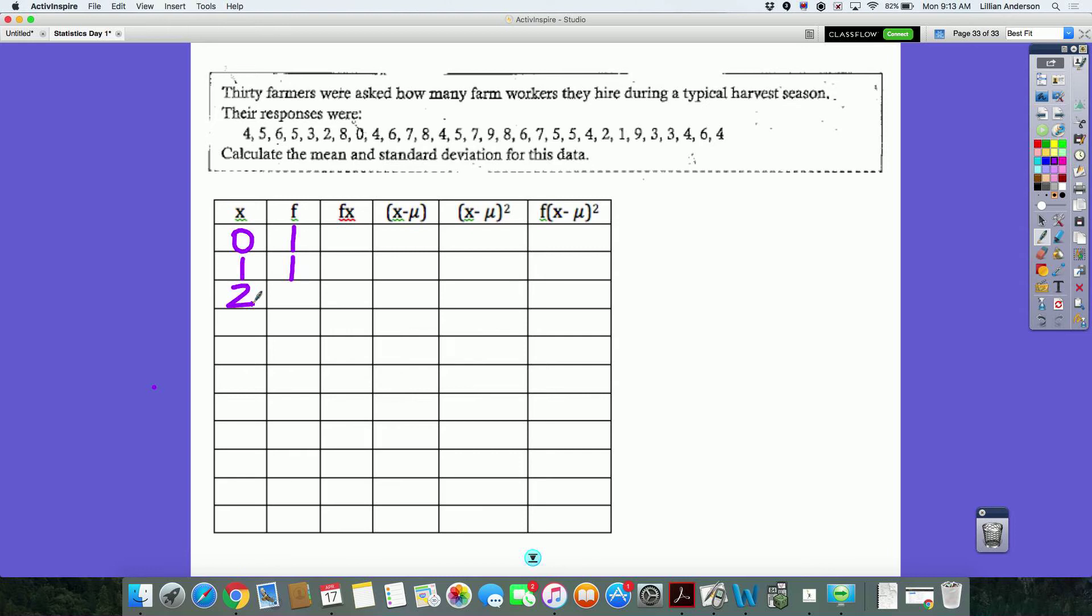So, then how many farmers hired two workers? Two. How many farmers said they hired three workers? Three. And we're going to keep going. We're creating our frequency table. So, we're going to have four, five, six, seven, eight, and nine. I want you guys to go ahead and fill in the rest of the frequency. F represents the frequency. How many hire four workers? How many hire five workers? How many hire six extra workers? Four. Seven. Three. Eight. Three. Three or two? Three. And nine? Two.